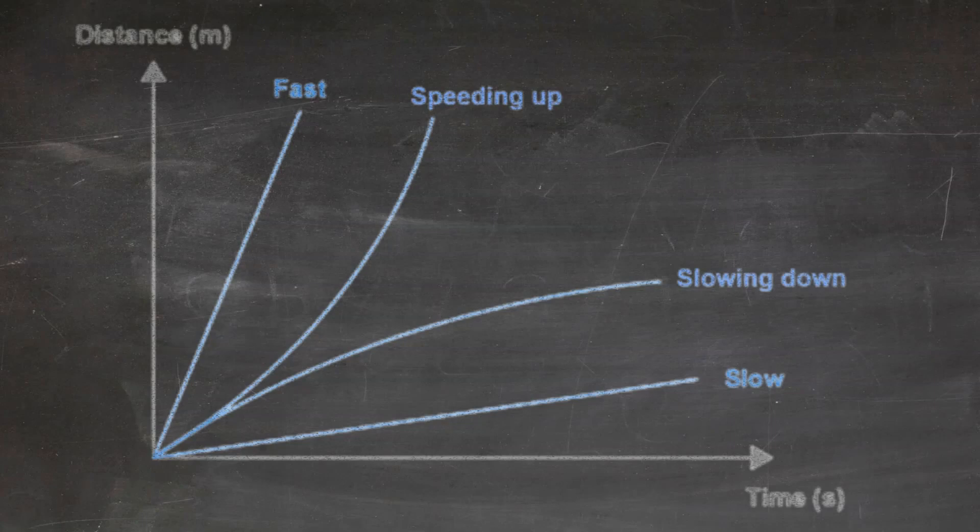You look at the lines for speeding up and slowing down, and we can see that these are curved lines. The speeding up line is a curved line pointed up, while the slowing down line is a curved line that is flattening out.